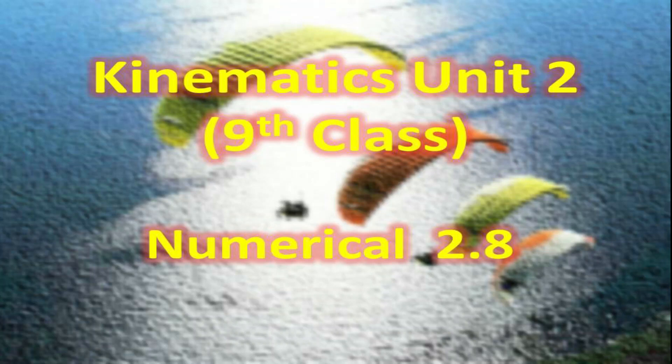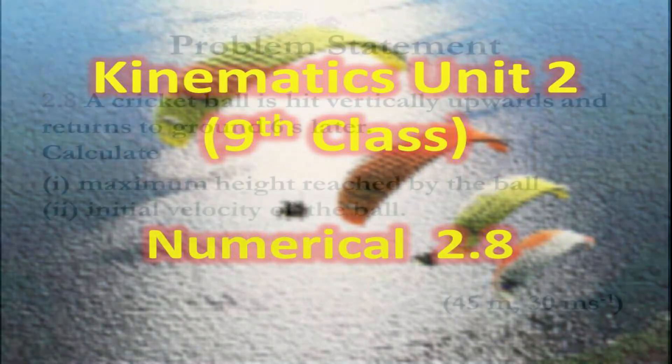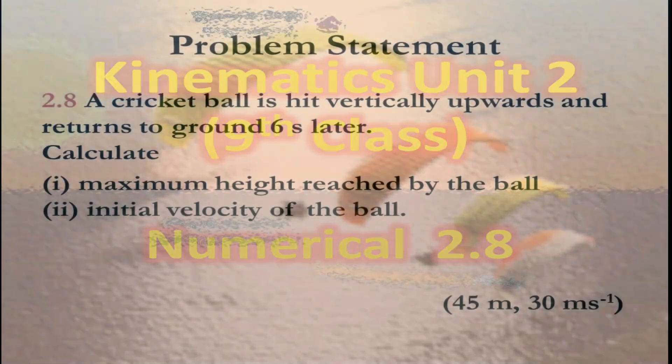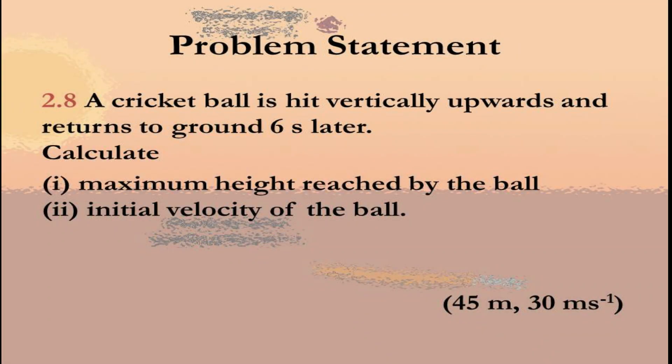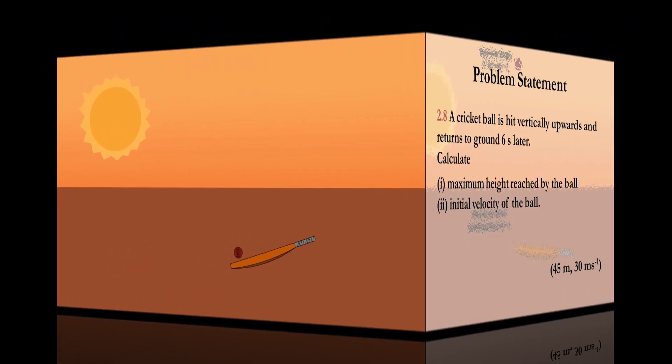Assalamu alaikum everyone. Today we will start numerical 2.8 of Kinematics, unit number 2, class 9th. Let's see the numerical statement of this problem. A cricket ball is hit vertically upward and returns to the ground 6 seconds later. Calculate the maximum height reached by the ball and the initial velocity of the ball.